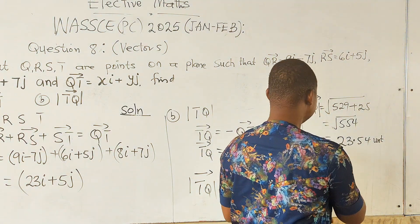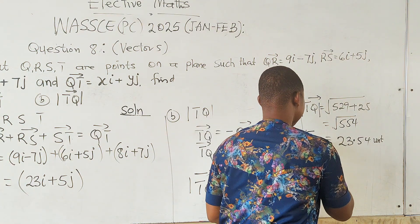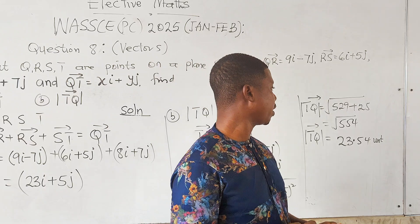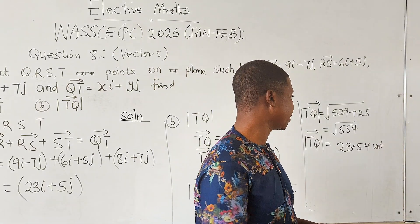So the magnitude of vector TQ is equal to 23.54 units.